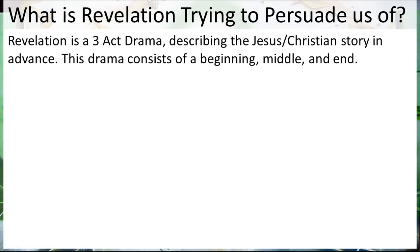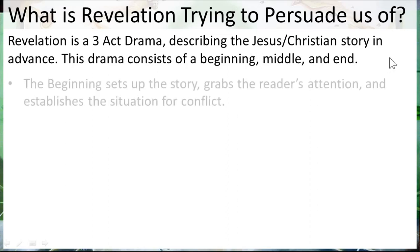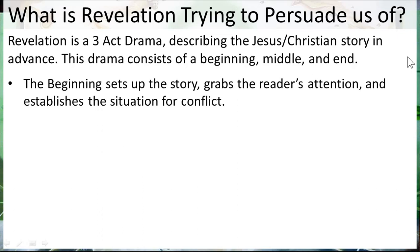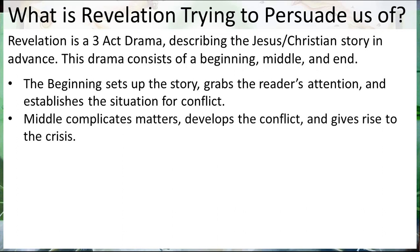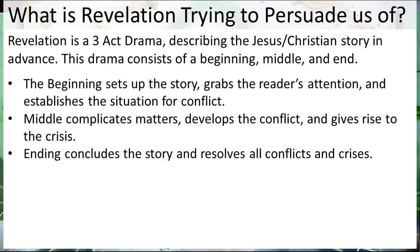Revelation is also a three-act drama. God had John write this as a drama — it's describing Jesus and the Christian story in advance. It's history in advance, it's a prophecy. This prophetic drama consists of a beginning, a middle, and an end. The beginning sets up the story, grabs the reader's attention, and establishes the situation for conflict. The middle complicates matters, develops the conflict, and gives rise to the crisis. And then the ending concludes the story, resolves all conflicts and crises. There is an ending to the story, and most of you already know it.